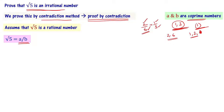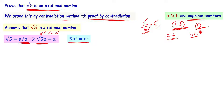Now root 5 equals a by b. I can write root 5 times b equals a. Squaring both sides: root 5 whole square times b square equals a square. So 5b square equals a square. I can write this as b square equals a square by 5.